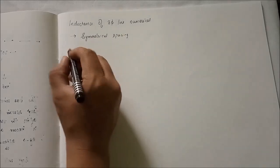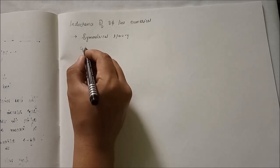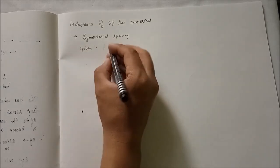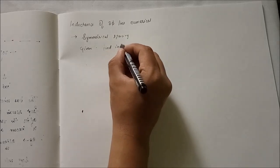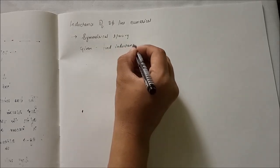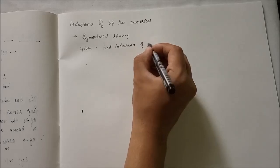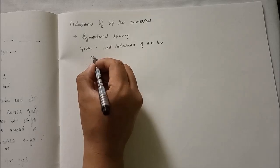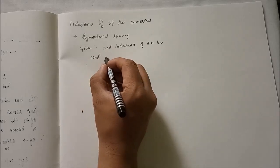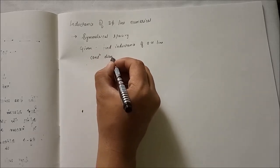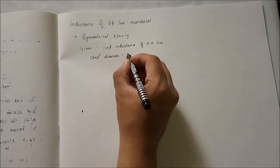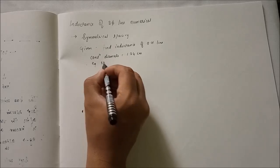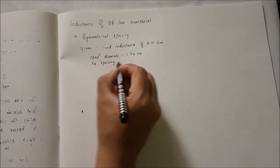In the numerical, it is given as find the inductance of overhead transmission line which has a conductor diameter of 1.24 cm with equilateral spacing of 2 meter.